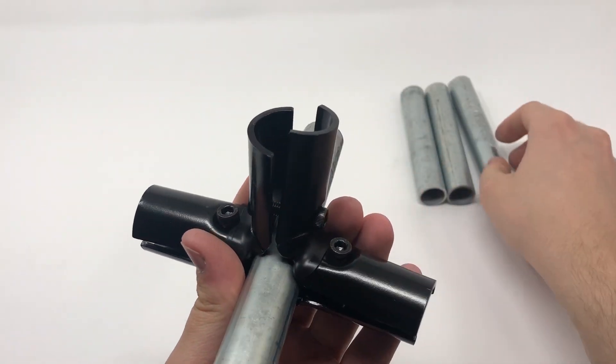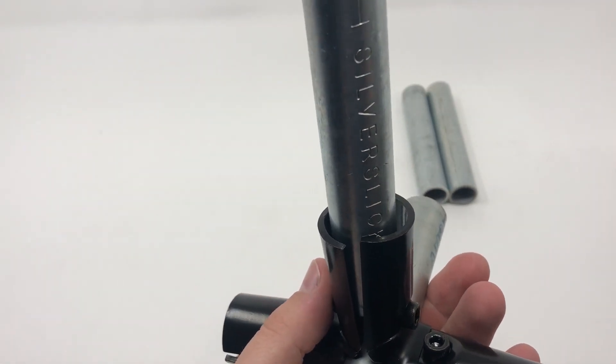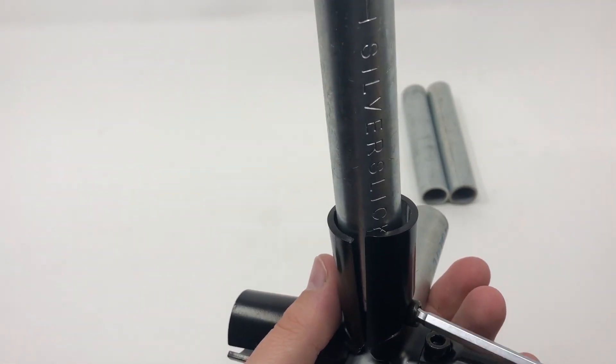Insert the connecting pipes and be sure to tighten evenly going back and forth between the bolts so you finish with a symmetrical connection.